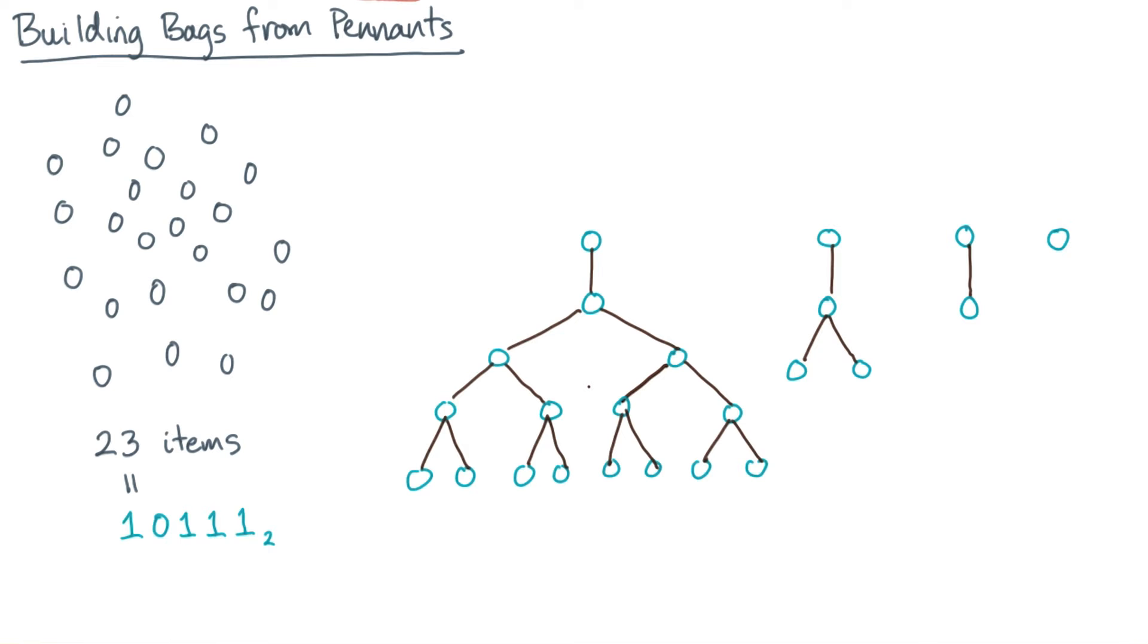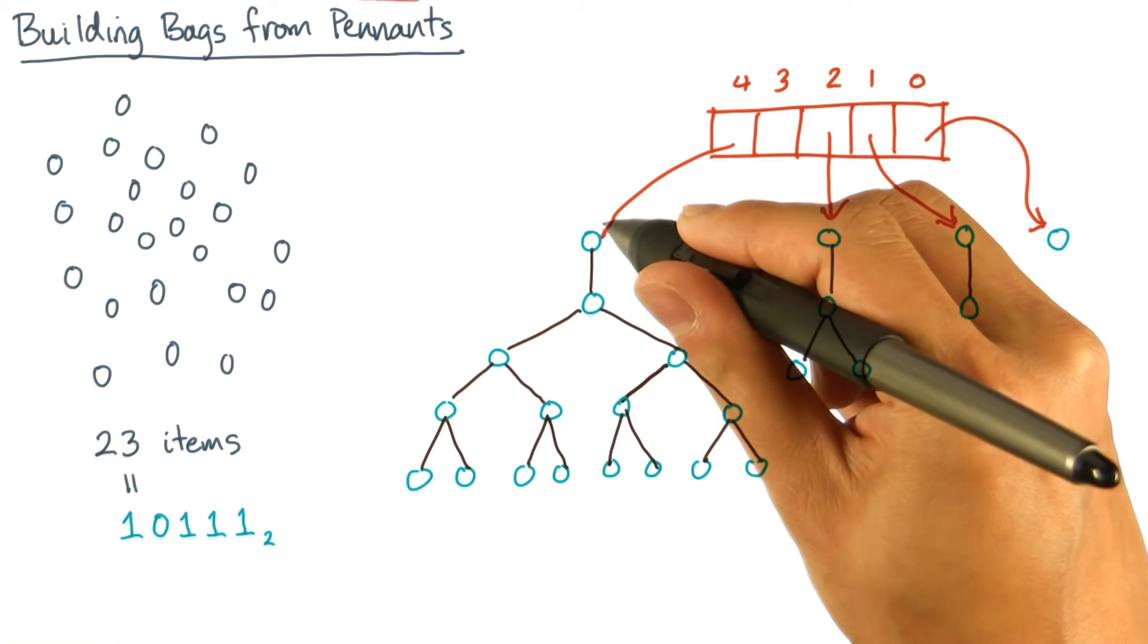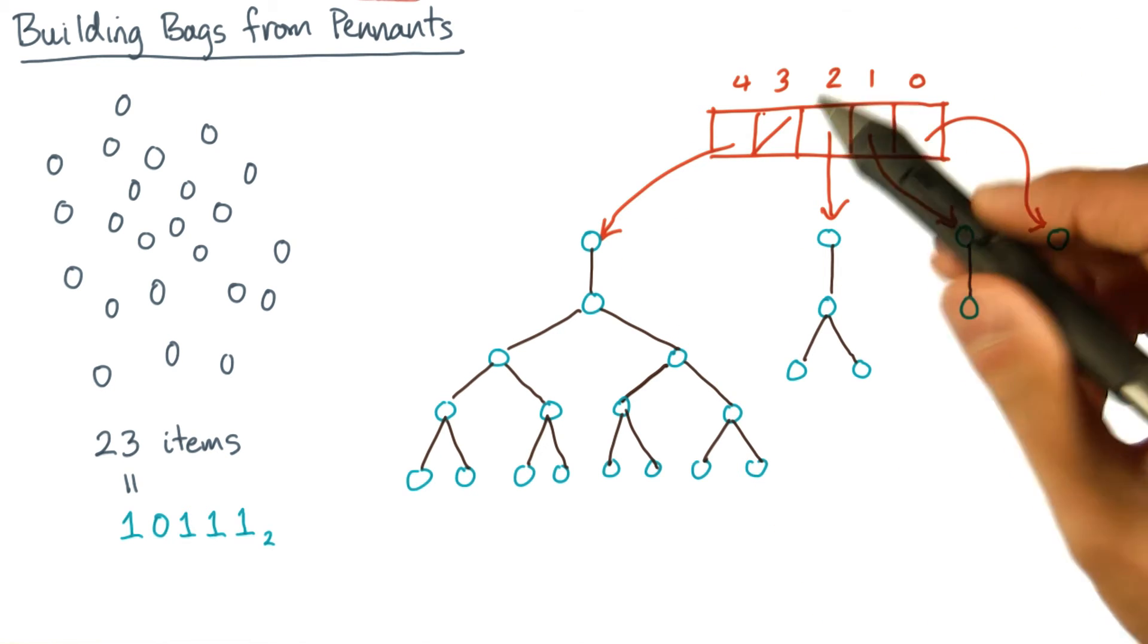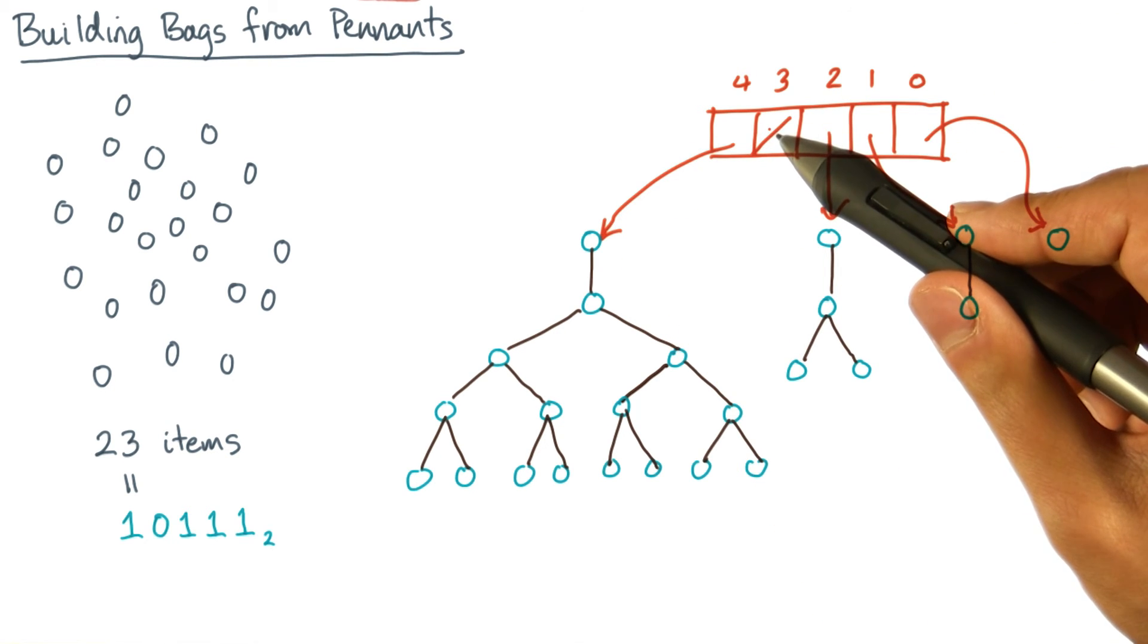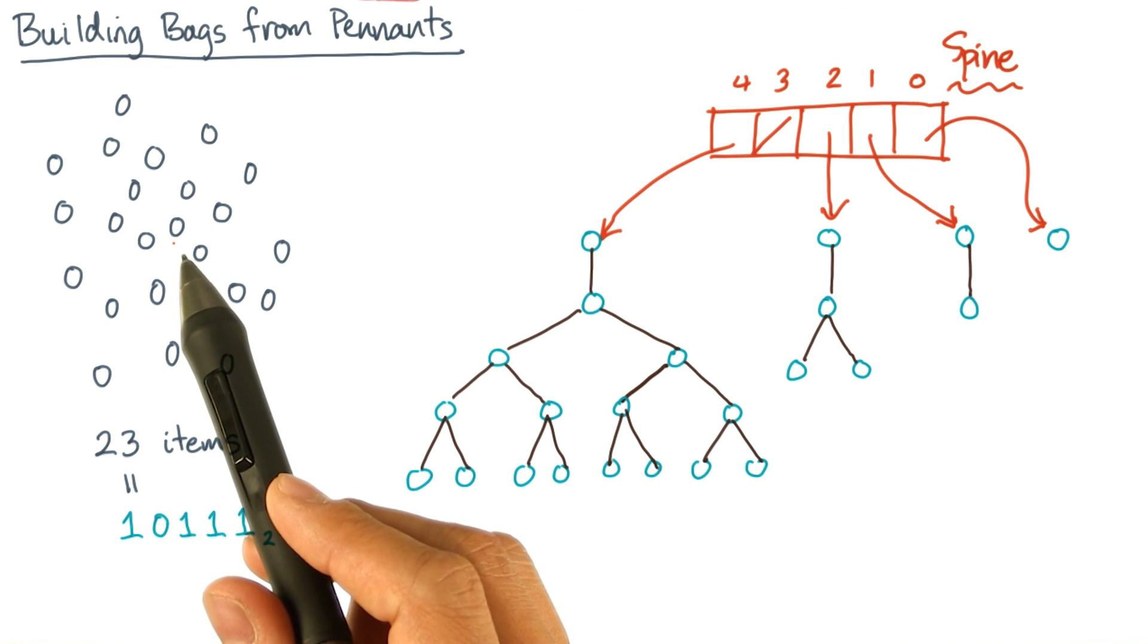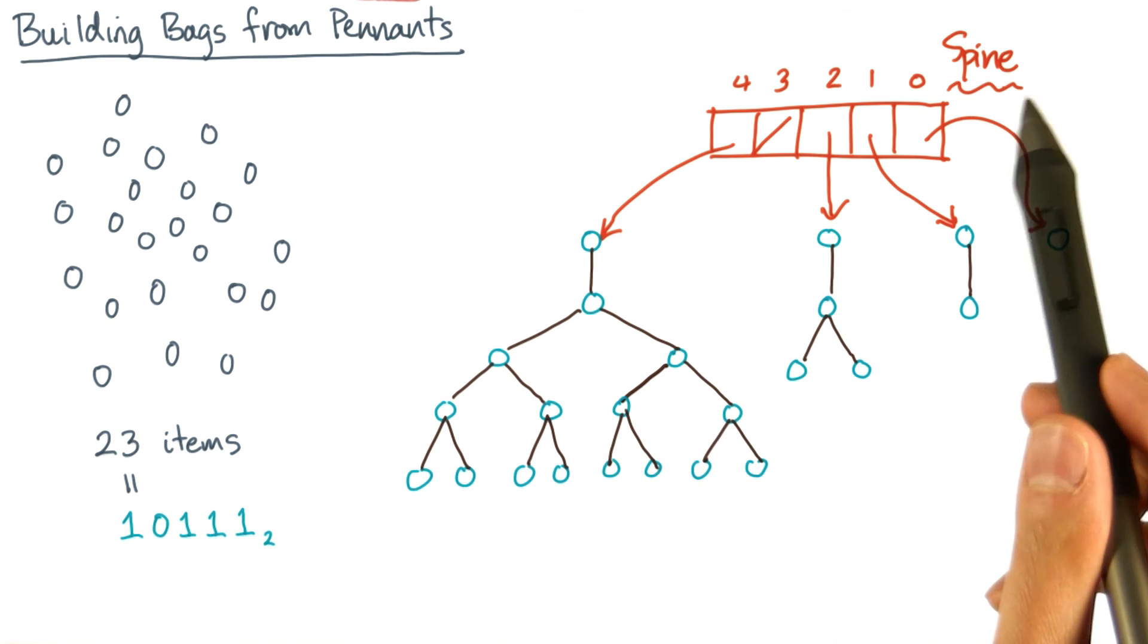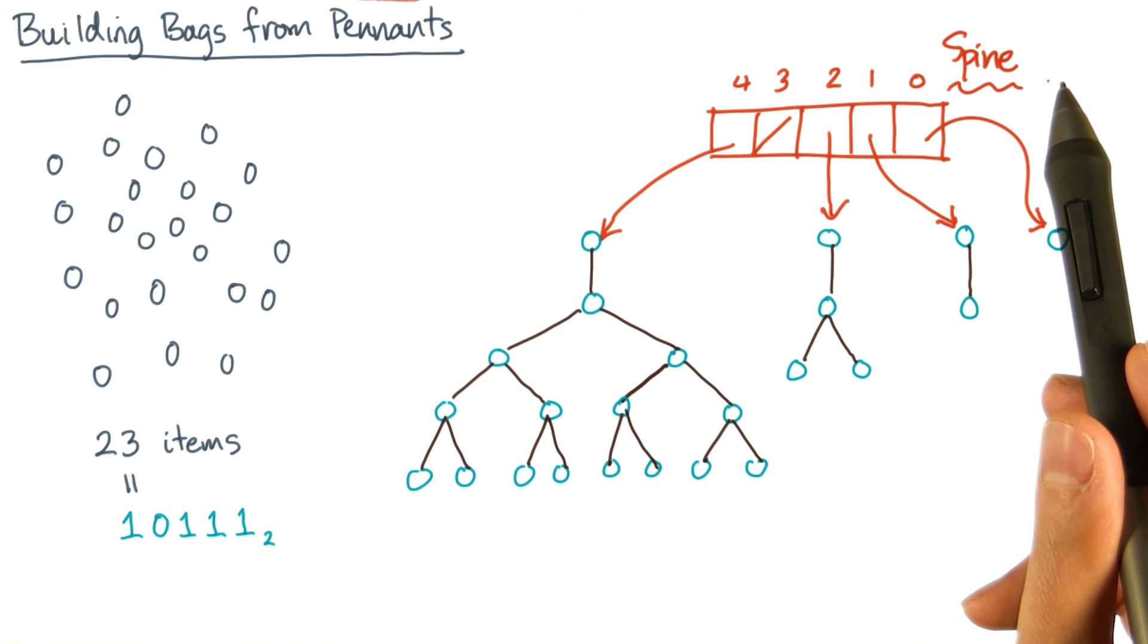Now I'm going to need to connect these in some way. So to do that, I'm going to use an array of pointers to the roots of each pennant, and I'll use a null pointer for the empty bit. Now this array, I'm going to give a special name. I'm going to call it a spine. So just as a brief recap, I've taken my collection of elements, I've broken it up into these power of 2 sized pennants, and I've connected them together with this thing that I'm calling a spine.